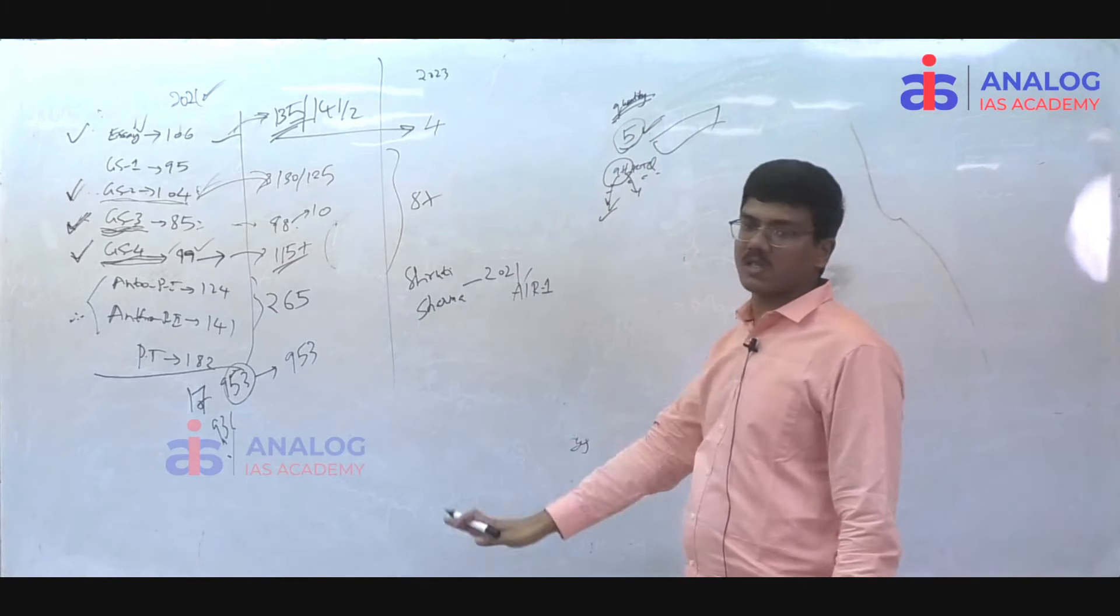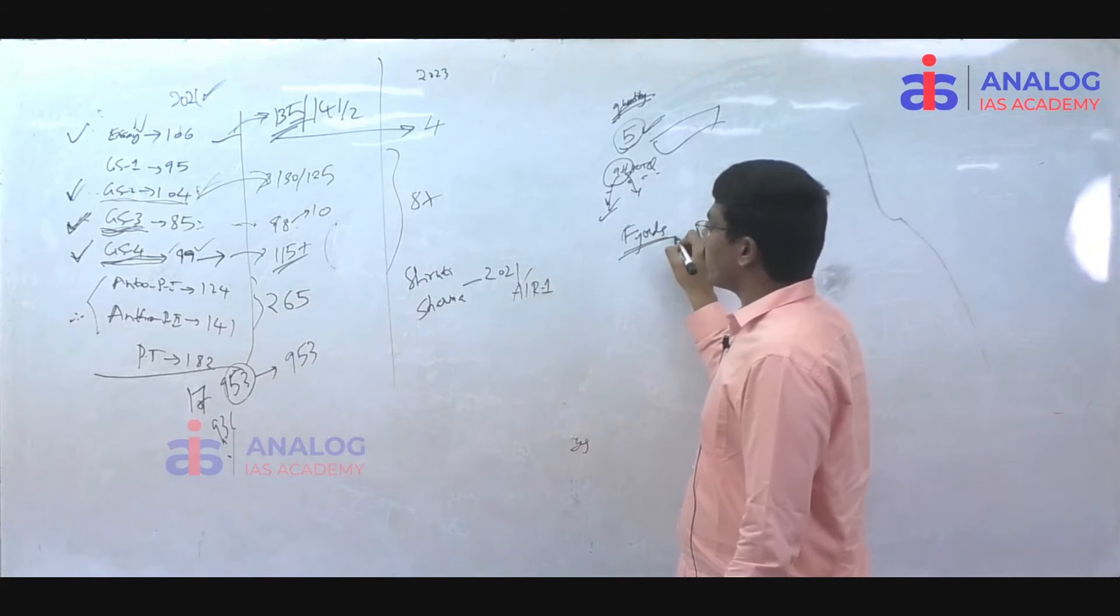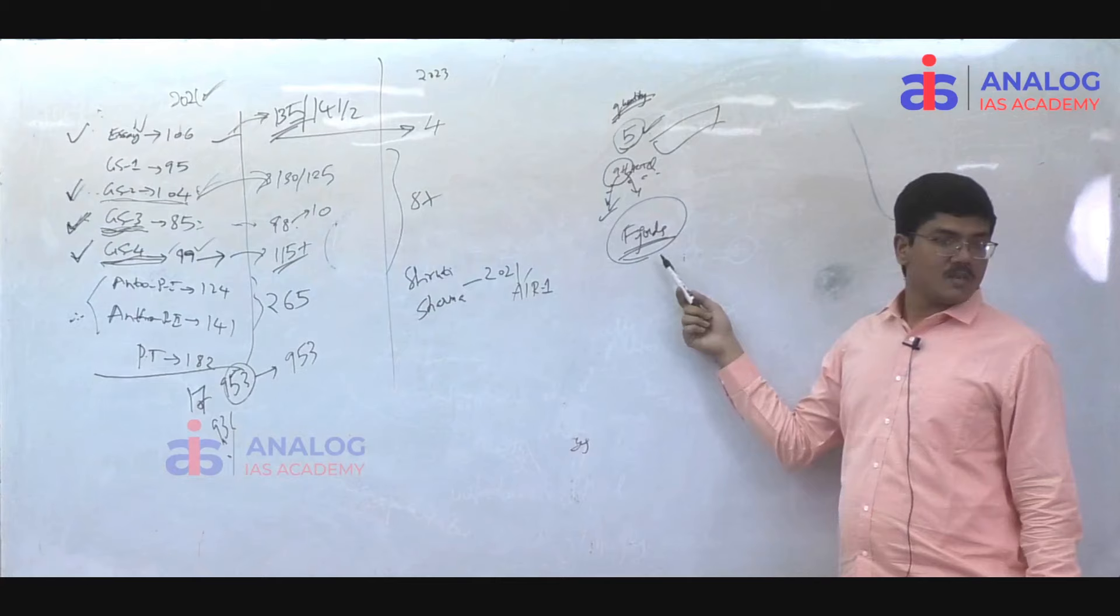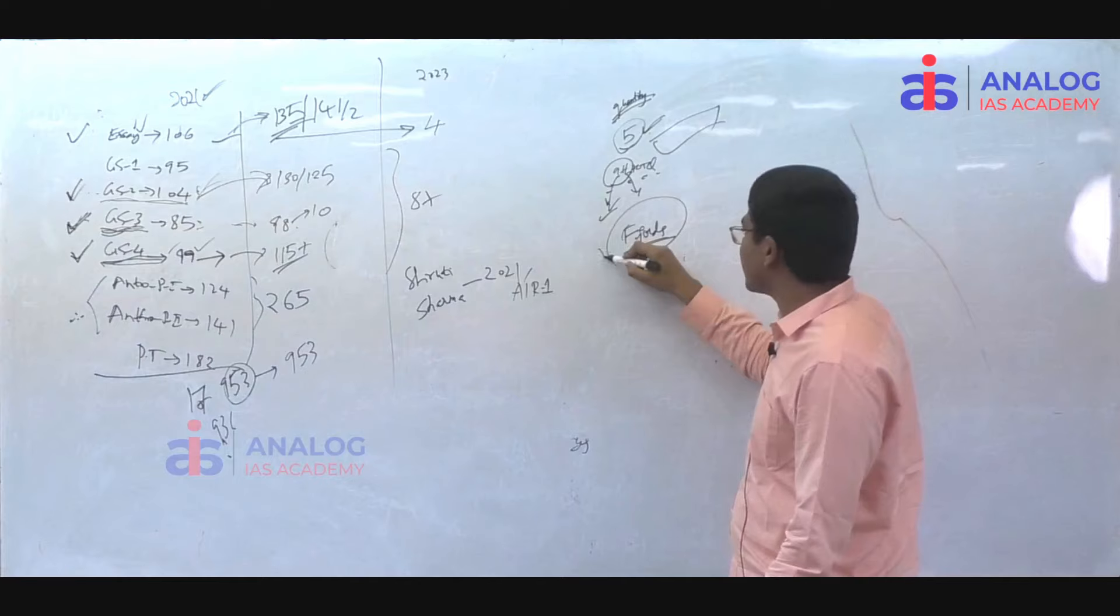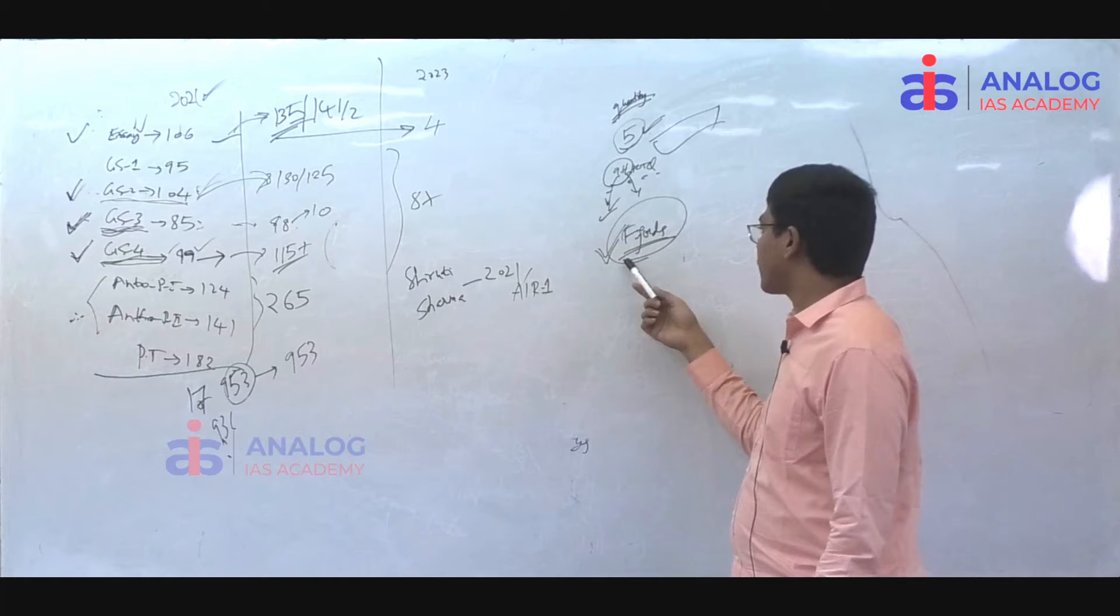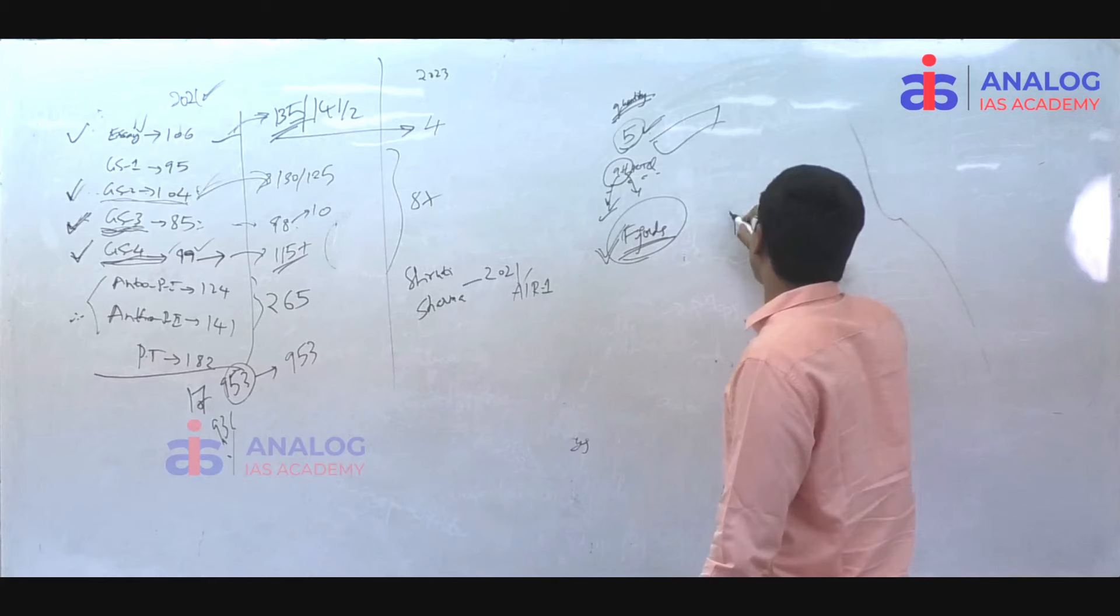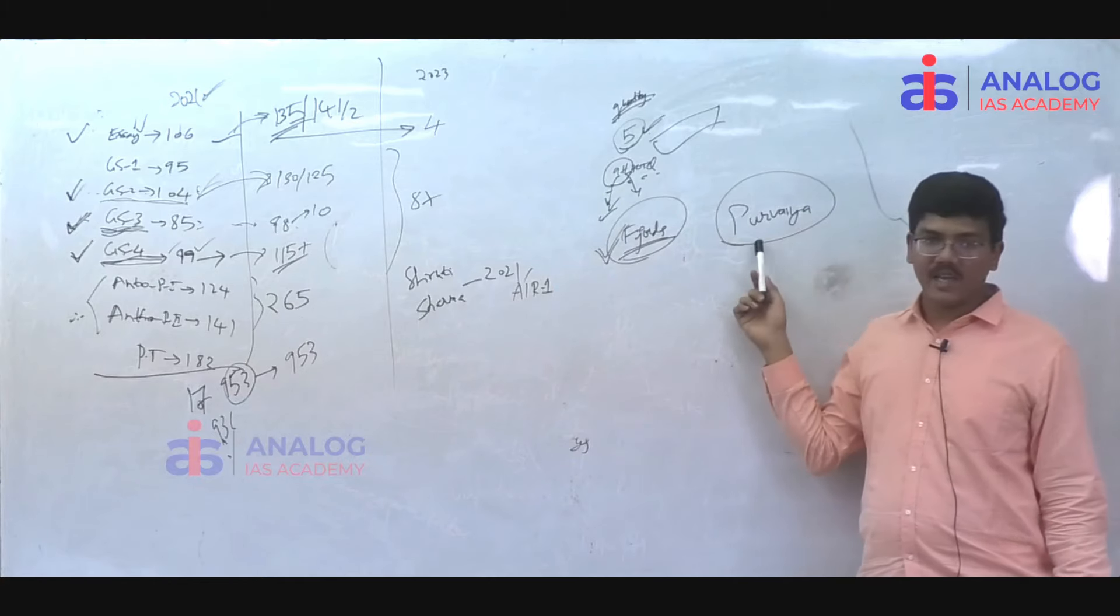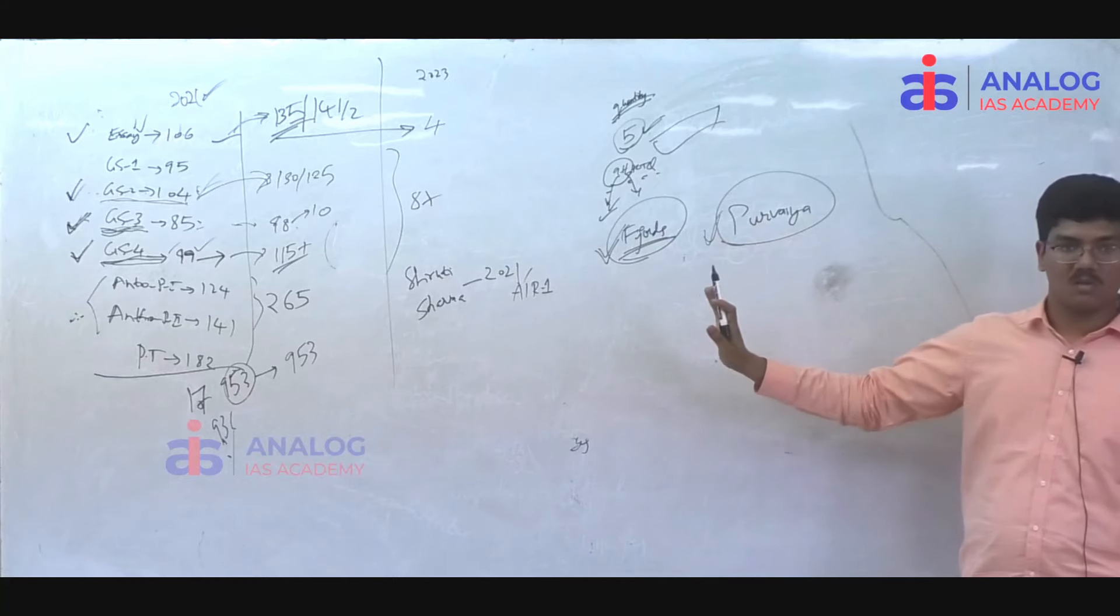Some people completely miss out on questions. GS1 there is one question. Here, Fjords. In 2023 GS1 paper, there was a question on Fjords. What is Fjords? This is a glacial landform. This was the first question, I think. There was also one question about Purvaya. This was also like vague idea. You don't expect them to come in the mains. Maybe prelims.